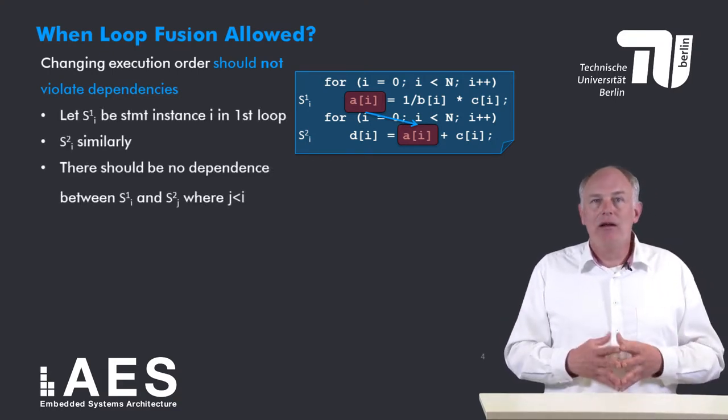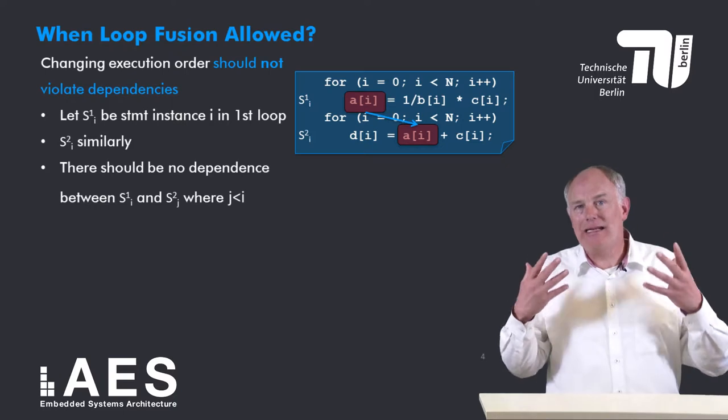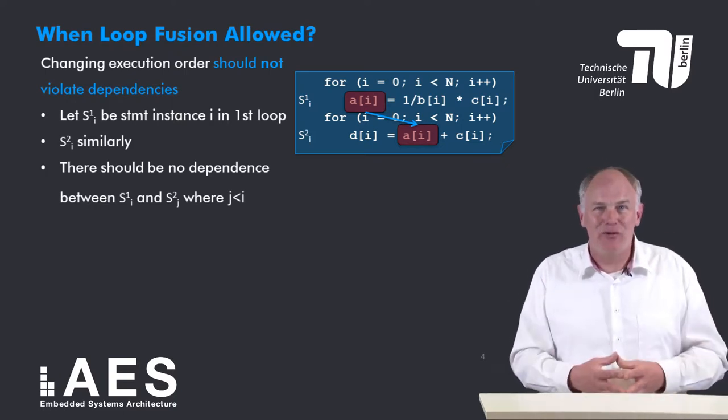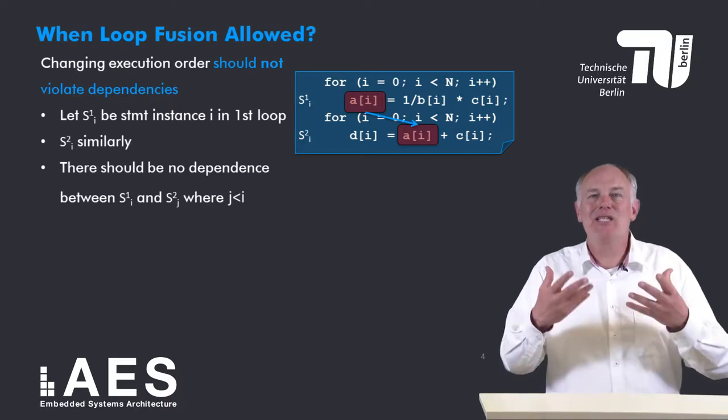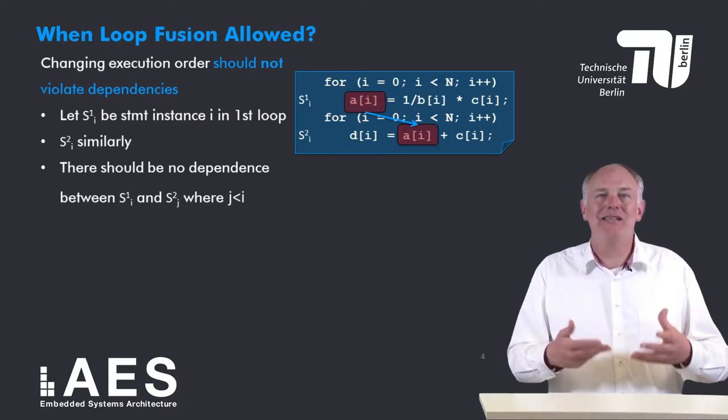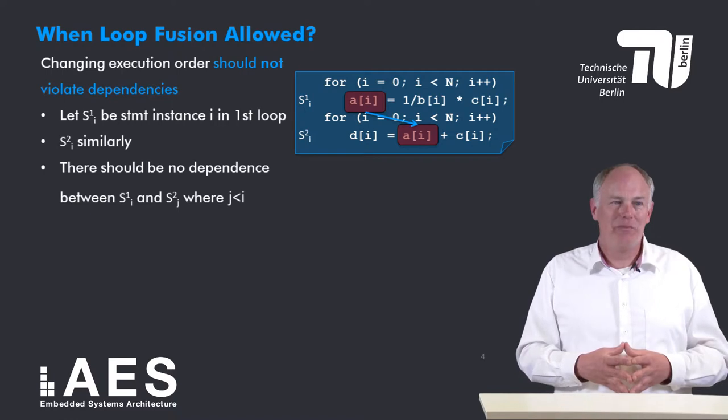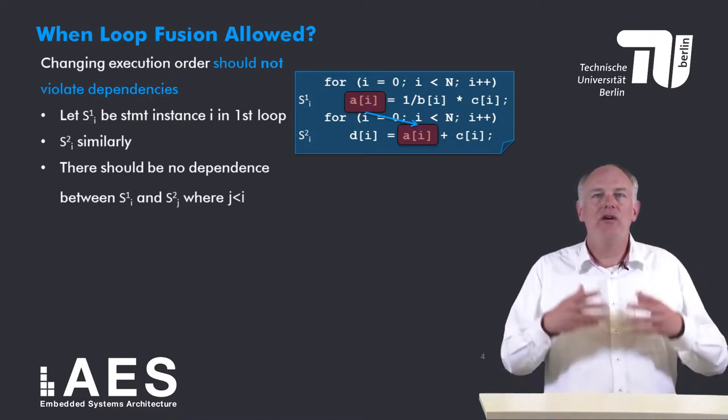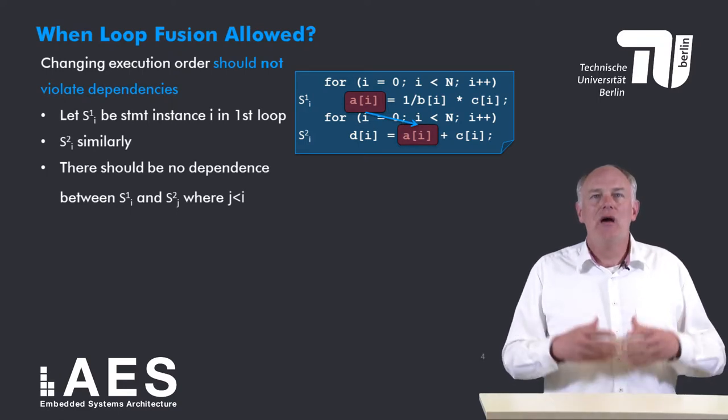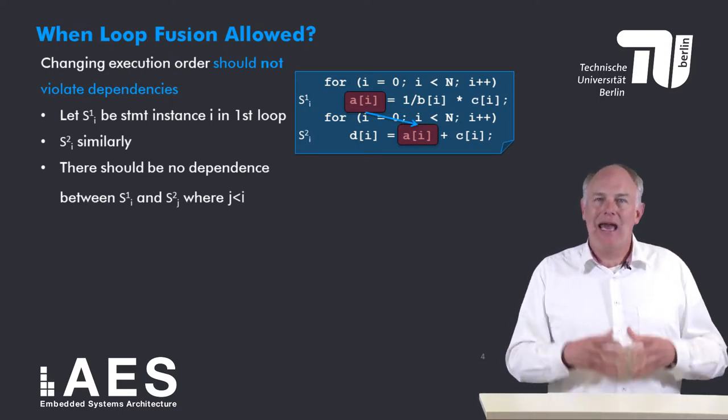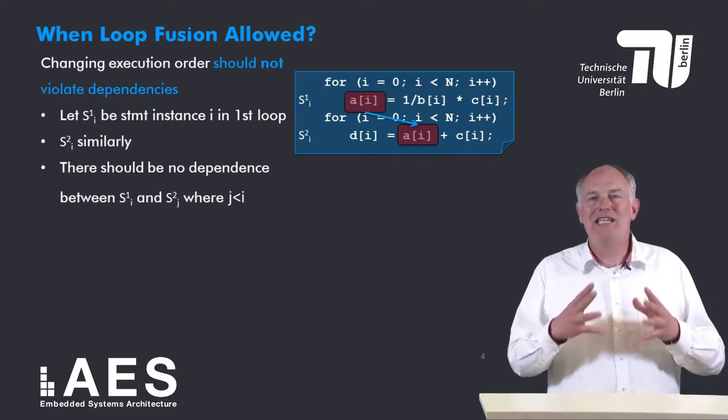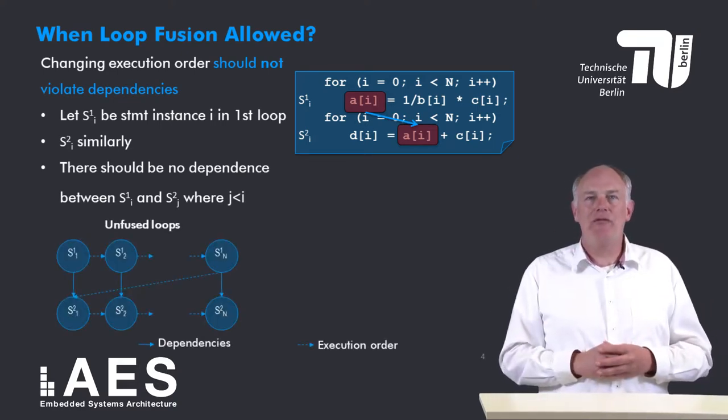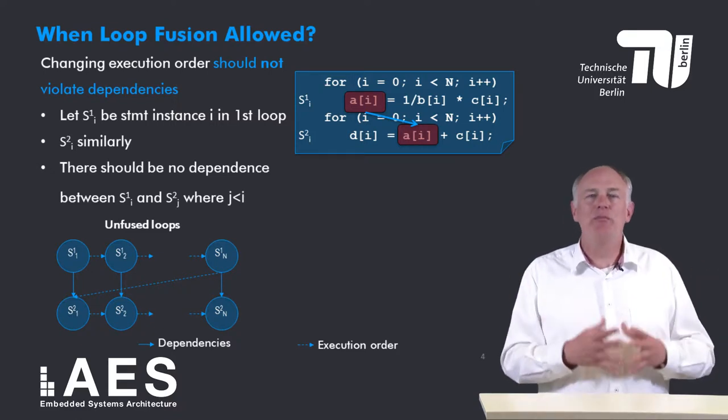In general, let S1[i] be the instance i of the statement in the first loop, and let S2[i] be the statement instance i in the second loop. Then loop fusion is allowed if and only if there is no data dependency between S1[i] and S2[j] where j is less than i. Let me prove this by a figure. A figure is not a proof, but still.